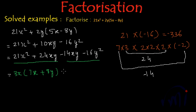And from the next group I can take 2y common and again inside the bracket we will have 7x + 8y.